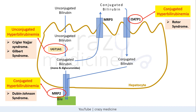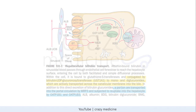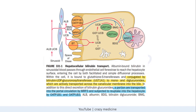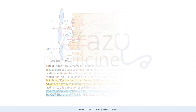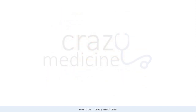Now we will study some important MCQ points regarding each syndrome in detail. This is the same mechanism image from Harrison's, which I have discussed in a simplified way in previous slides. Starting with unconjugated hyperbilirubinemia.